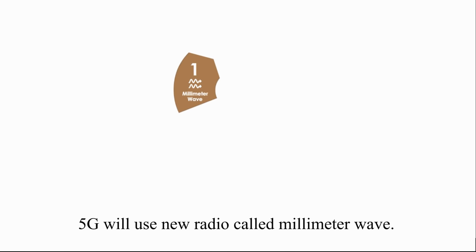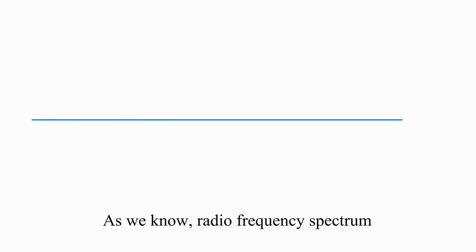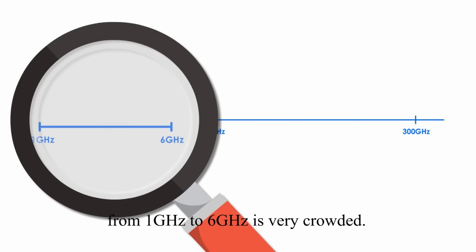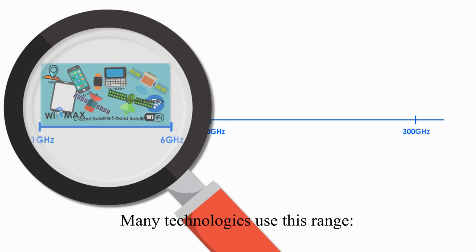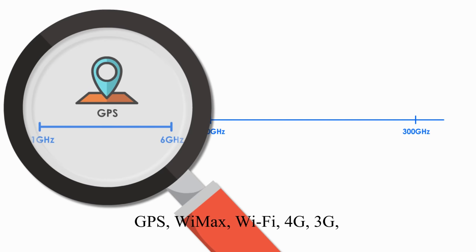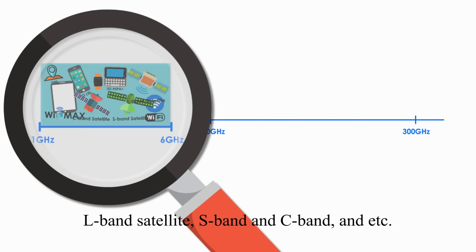First, 5G will use new radio called millimeter wave. As we know, radio frequency spectrum from 1 GHz to 6 GHz is very crowded. Many technologies use this range, such as GPS, WiMAX, Wi-Fi, 4G, 3G, L-band satellite, S-band and C-band satellite, etc.